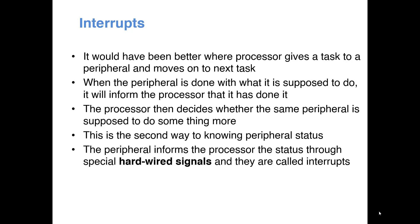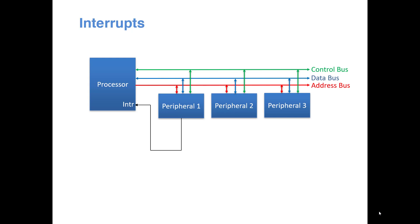Whenever the peripheral requires some attention from the processor, it will make a signal high through this dedicated wire. This is the pictorial representation: we have the processor and three peripherals connected to the system bus, and this is the interrupt signal coming from the peripheral all the way to the processor.